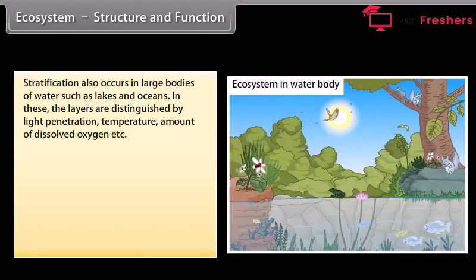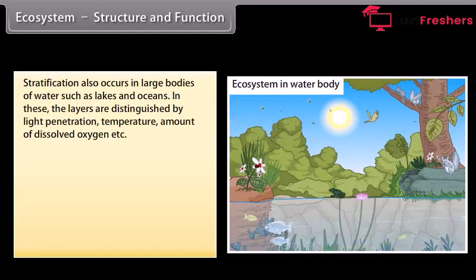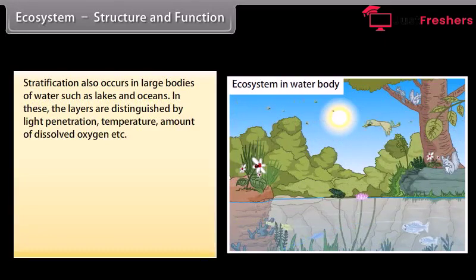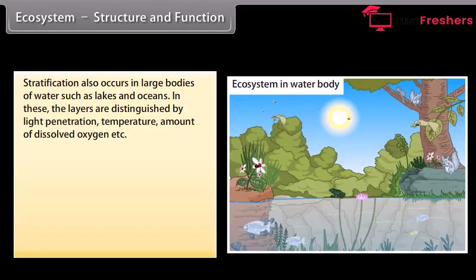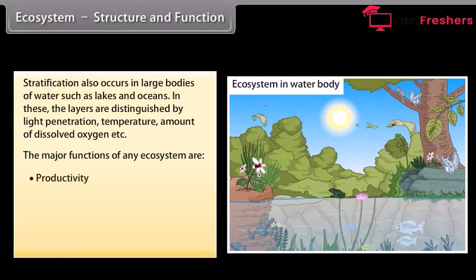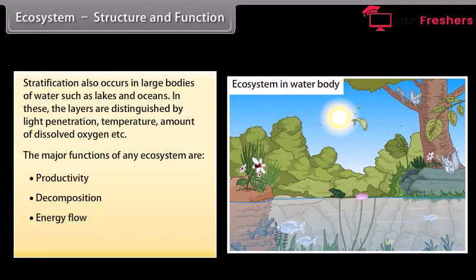Stratification also occurs in large bodies of water such as lakes and oceans. In these, the layers are distinguished by light penetration, temperature, amount of dissolved oxygen, etc. The major functions of an ecosystem are: productivity, decomposition, energy flow, and nutrient cycling.